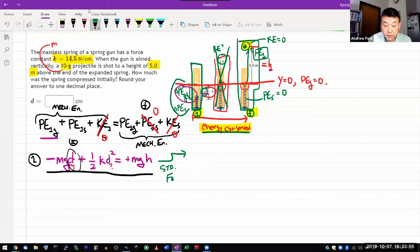Hopefully everyone here knows standard form for applying quadratic formula. That's the highest order first. One half k, that's my a, d squared, minus mgd. So minus mg is my b. And I have to move mgh over. So minus mgh, minus mgh is my c.